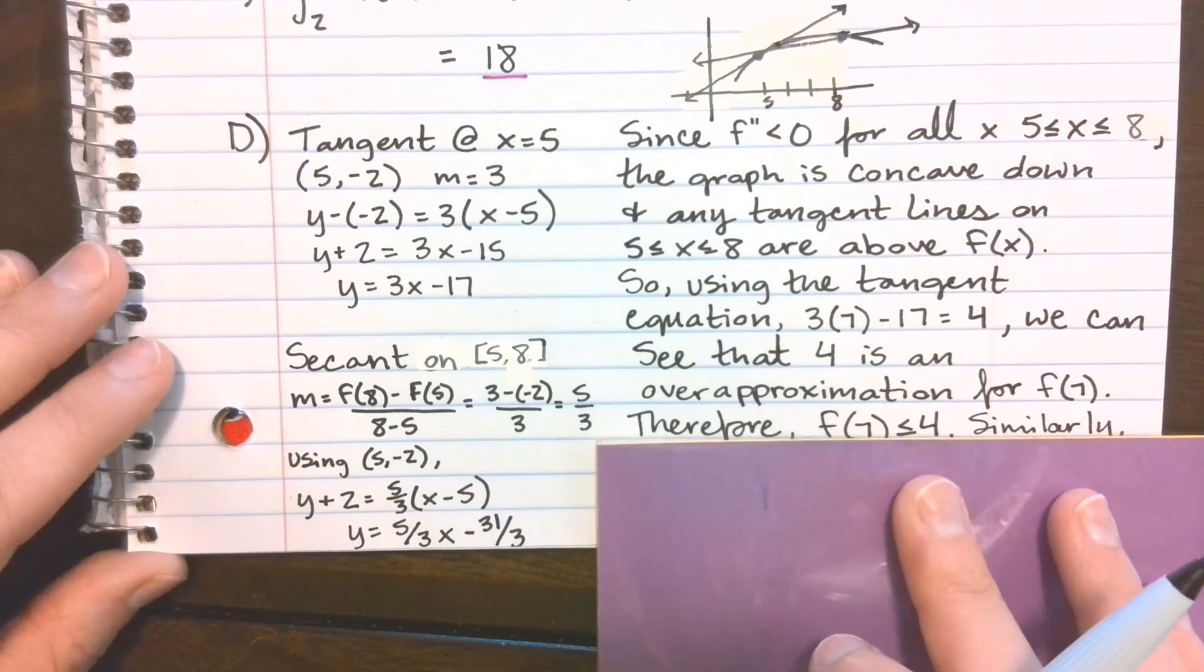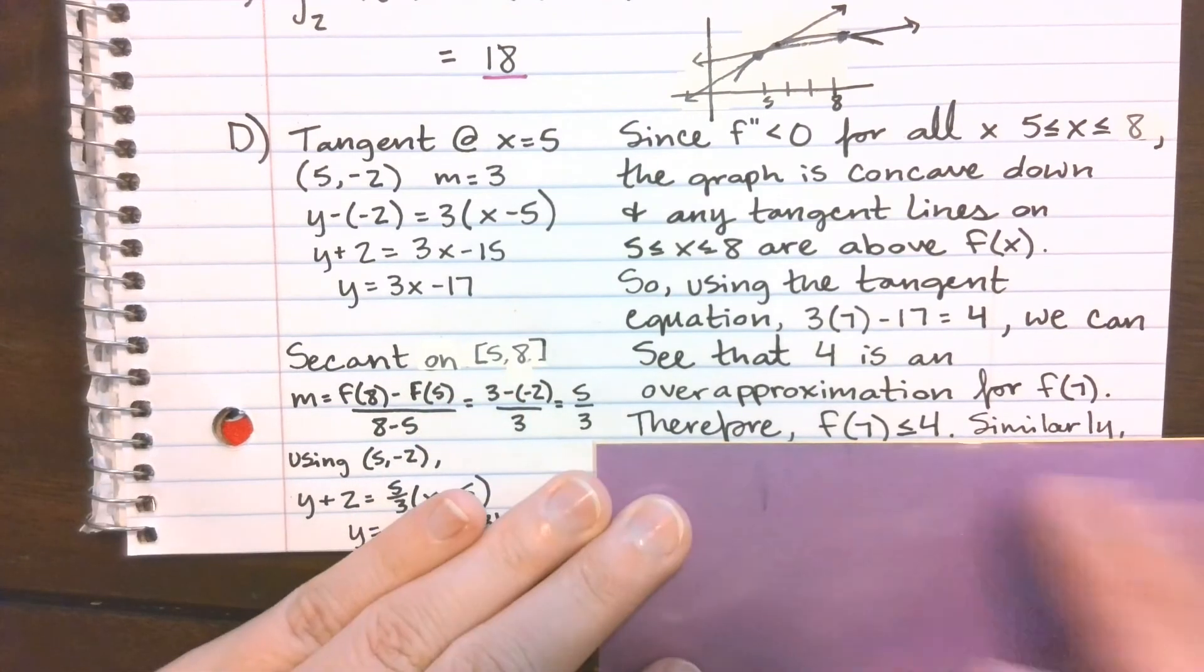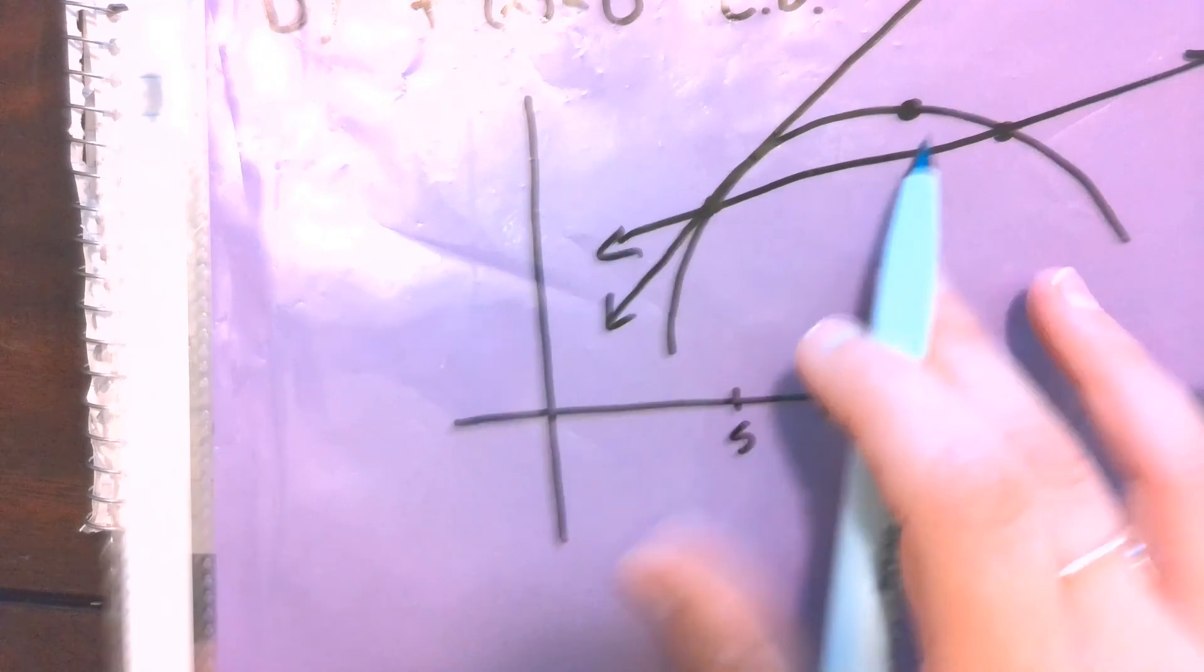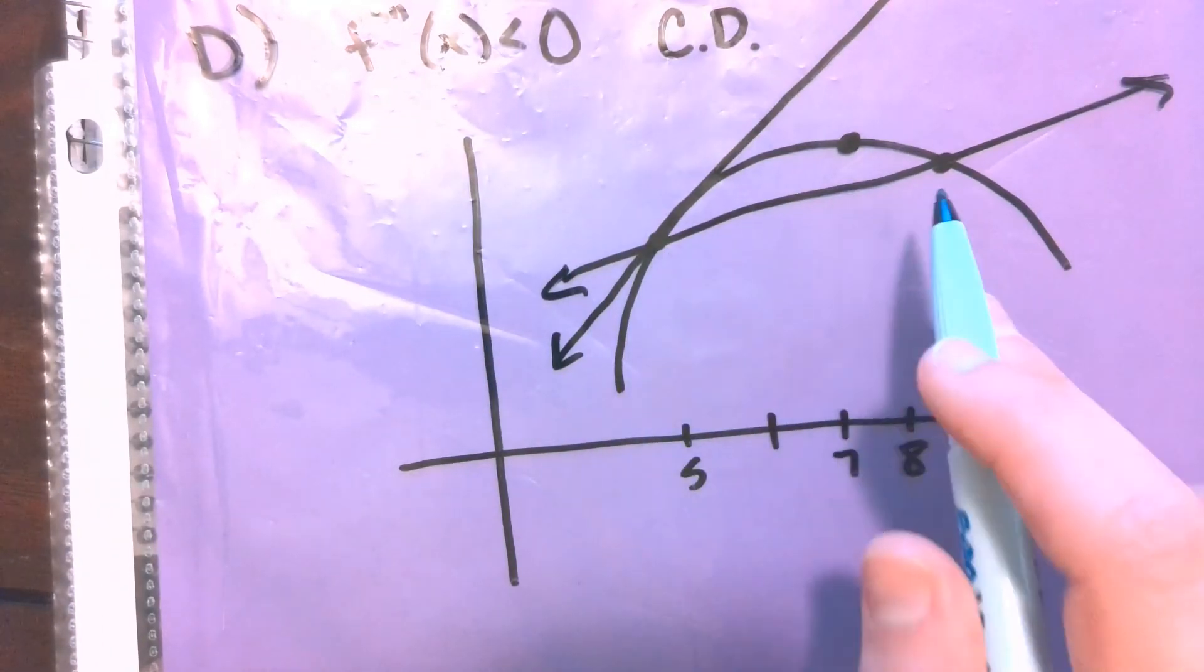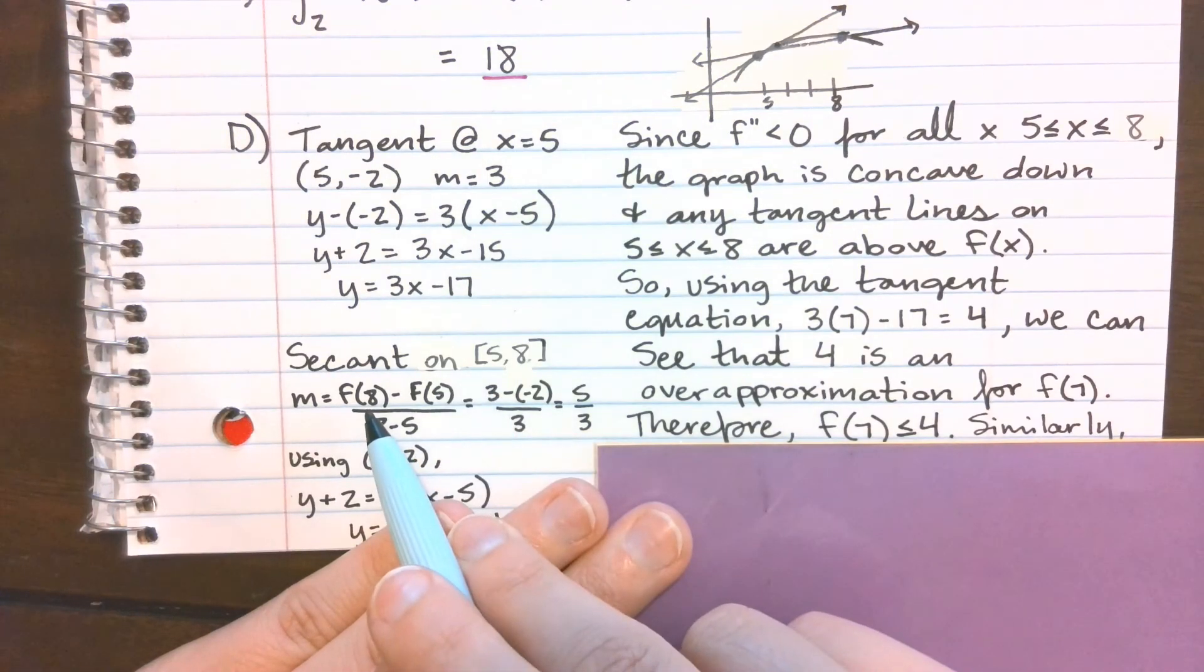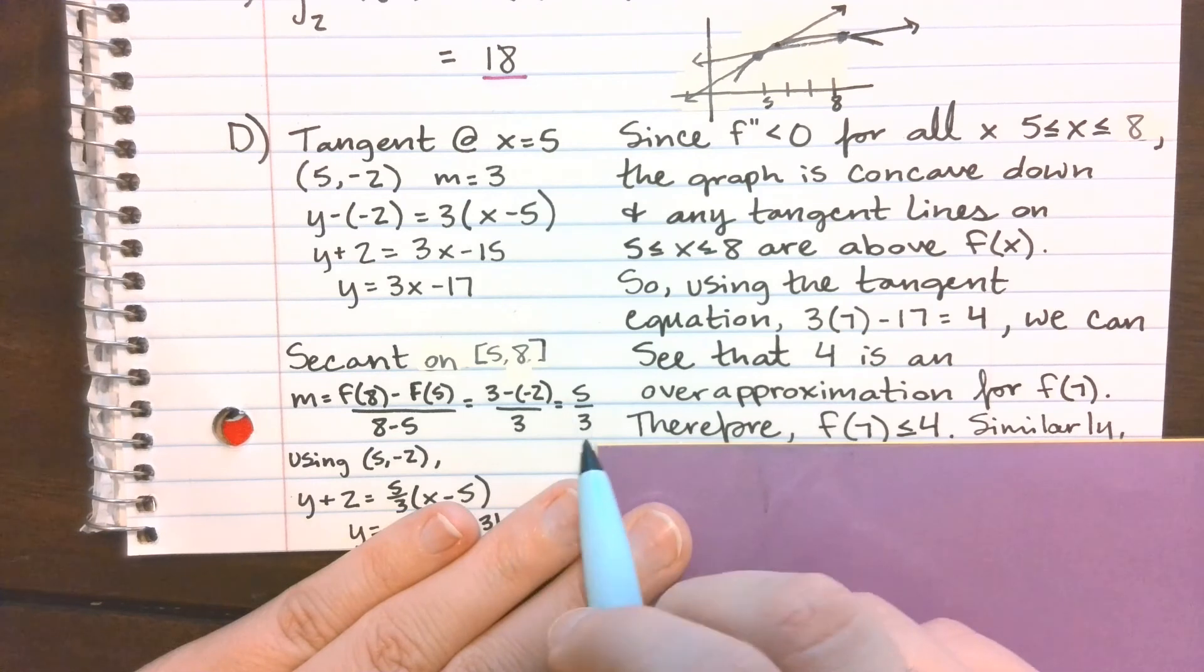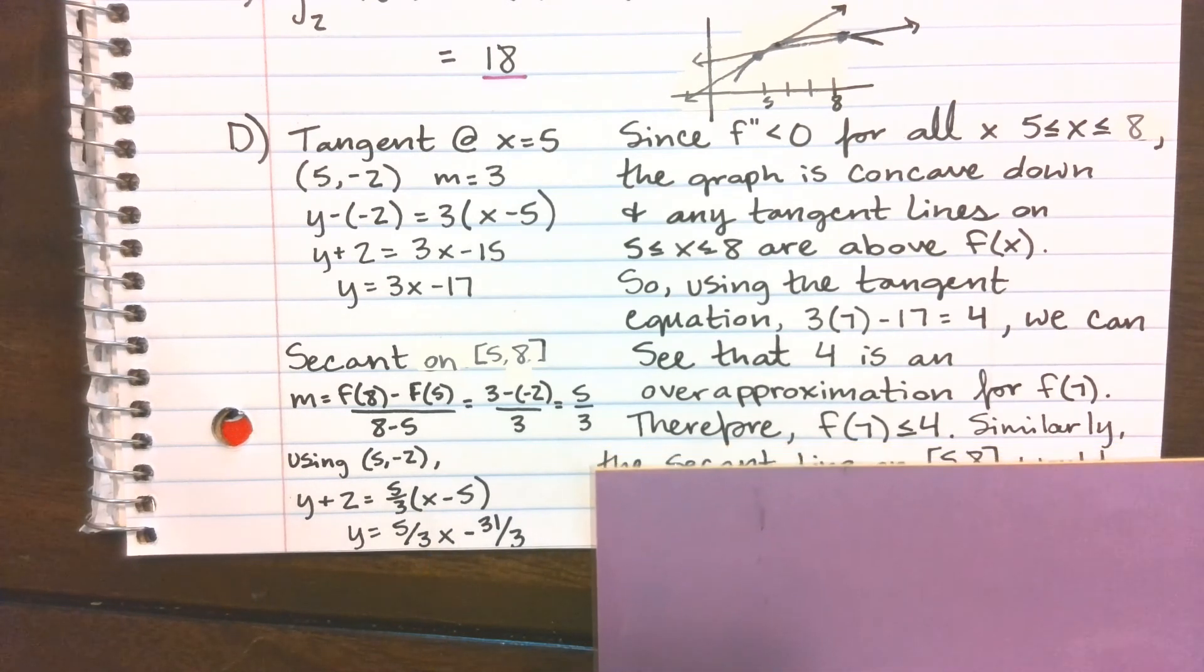The other part of this is using the secant between 5 and 8. So since we're looking at a line that's not tangent, it's secant. So if we're looking at this line right here, first I'm going to actually have to find the slope between 5 and 8. So using my table, I can use my values for f of 8 and f of 5 to find the slope between them as 5 thirds. And then either using f of 5 or f of 8, it really doesn't matter, but I used f of 5. I can write the equation for that line. And then same thing, I'm going to plug 7 into this, and this should be an under-approximation for f of 7.